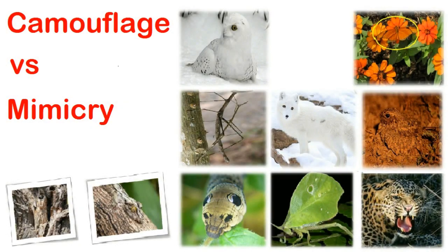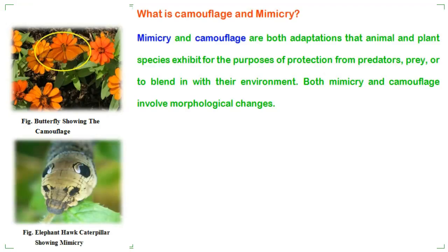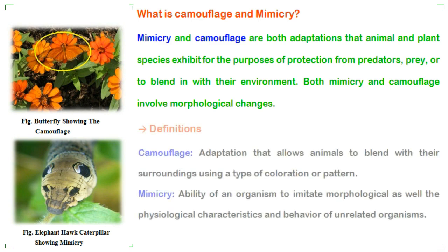In this video we will learn about the major differences between camouflage and mimicry. Mimicry and camouflage are both adaptations that animal and plant species exhibit for the purposes of protection from predators, or to blend in with their environment. Both mimicry and camouflage involve morphological changes. First of all, we will define camouflage and mimicry.